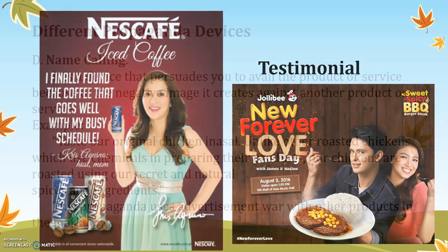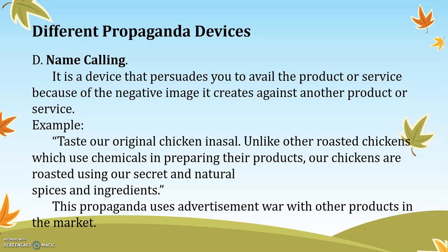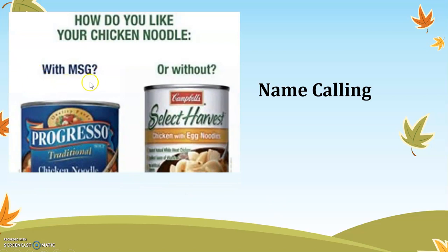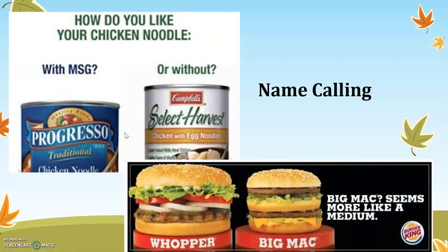Name calling: a device that persuades you to choose a product or service by creating a negative image of another. Example: 'Taste our original chicken at Azale — unlike other roasted chickens which use chemicals, ours are roasted using secret natural spices.' This propaganda creates advertisement wars between products. One example shows a comparison: 'with MSG' versus 'without MSG.' Another compares the Whopper and the Big Mac by size.